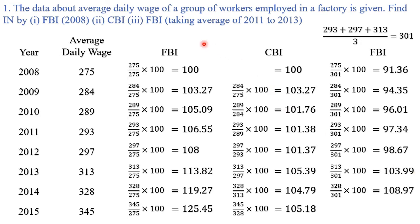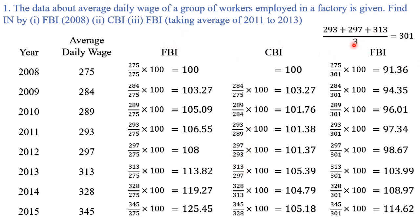So in Question 1 we used three methods: first, fixed base index with 2008 as the base year; second, chain base index with each preceding year as the base year; and third, fixed base index with an average value of 2011 to 2013 — that is, three years — as the base. This is how you solve this question.